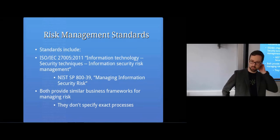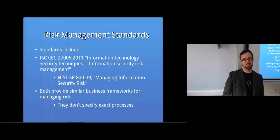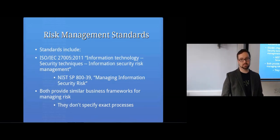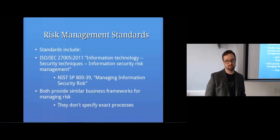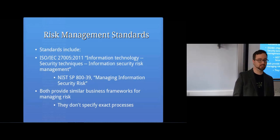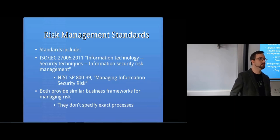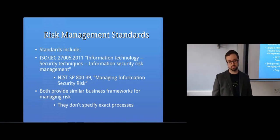There are standards you can follow to make sure you're doing risk management in a way that makes sense. There's ISO 27005 (2011) — Information Technology: Information Security Risk Management — and there's NIST Special Publication 839: Managing Information Security Risk. In similar ways they provide a framework for an organization to manage their risk. They don't specify exactly what processes you should follow, but they do recommend the kinds of things I'm talking about in this lecture, so that you're following best practices.